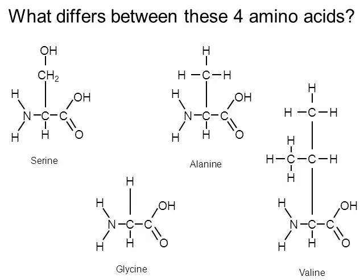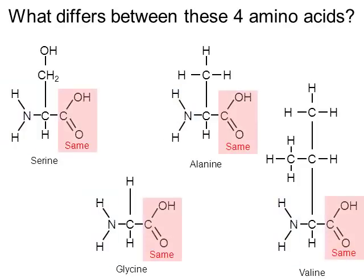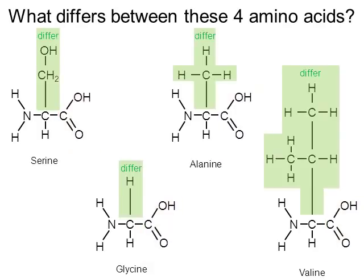Here are four of the 20 amino acids: serine, glycine, alanine, and valine. The question is: what differs between these four amino acids? Notice they each have the same amino group (NH2) and the same carboxyl group (COOH, highlighted in red). What makes these four different is their R group, highlighted in green — that is the only distinguishing feature between them.